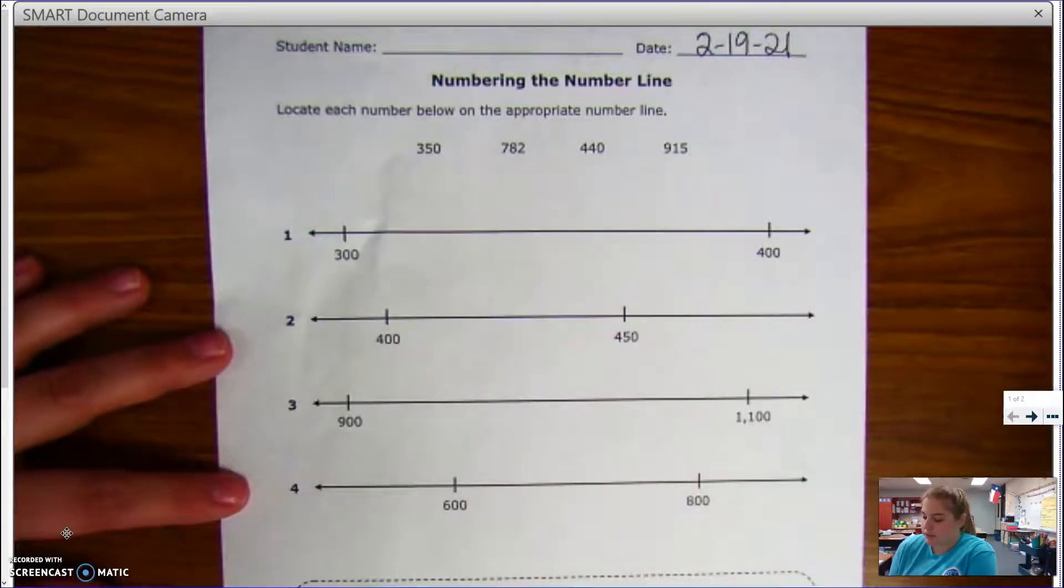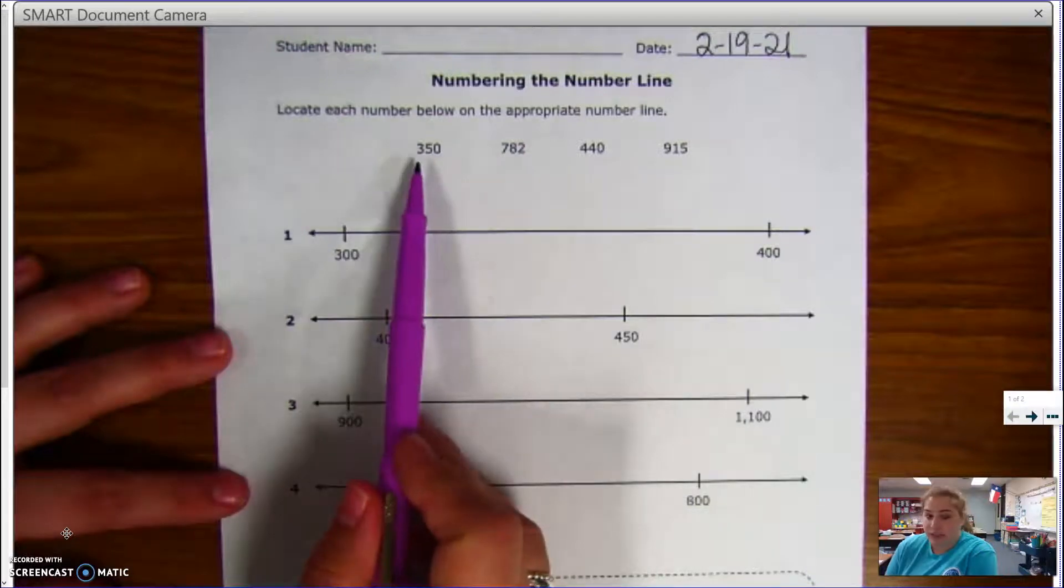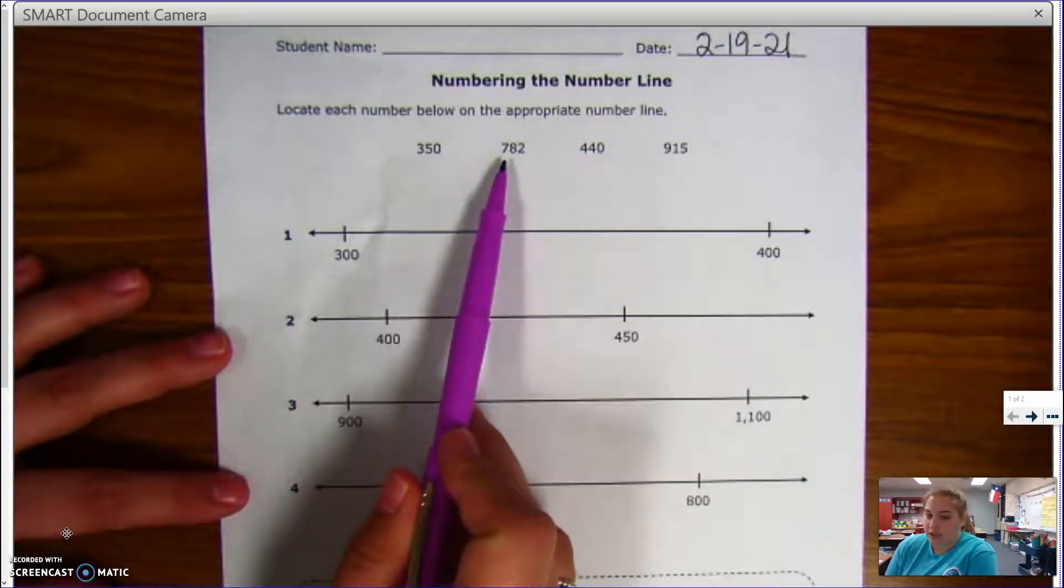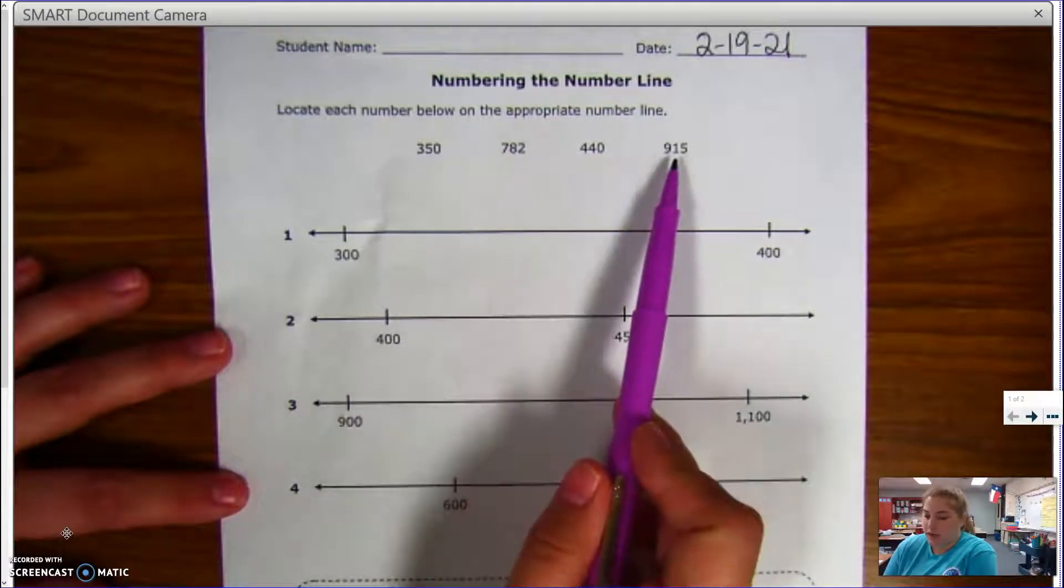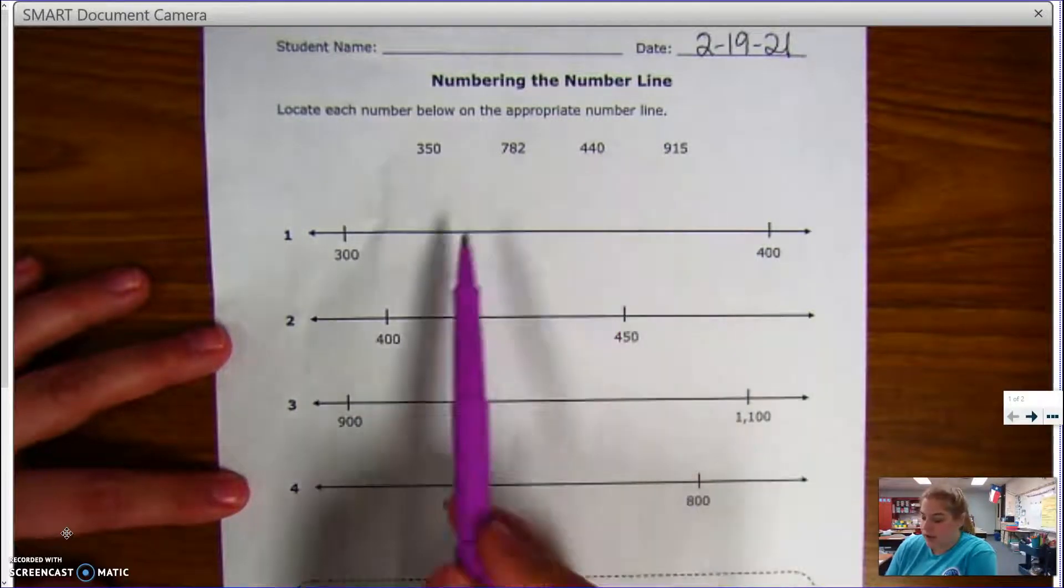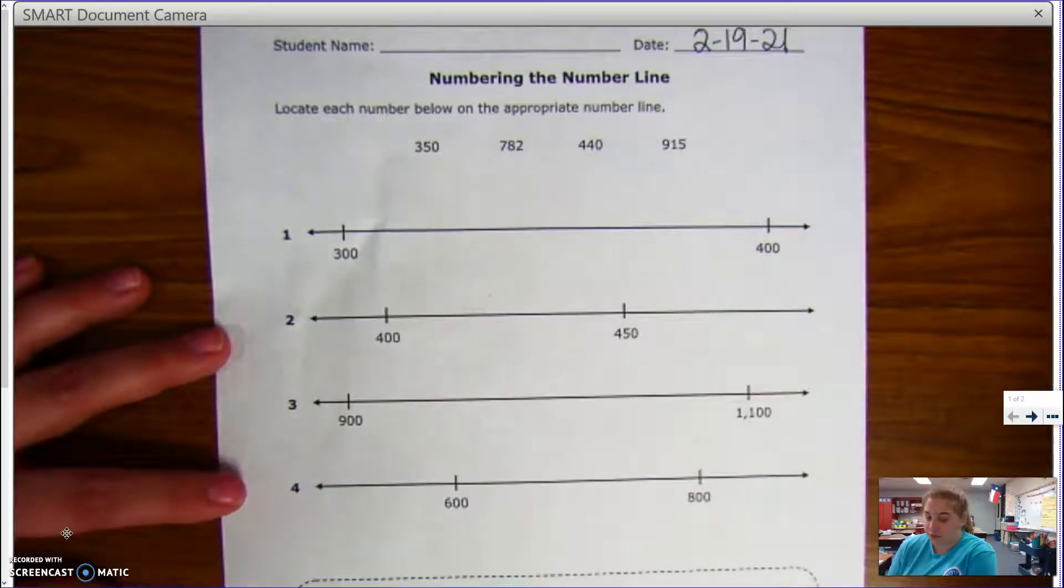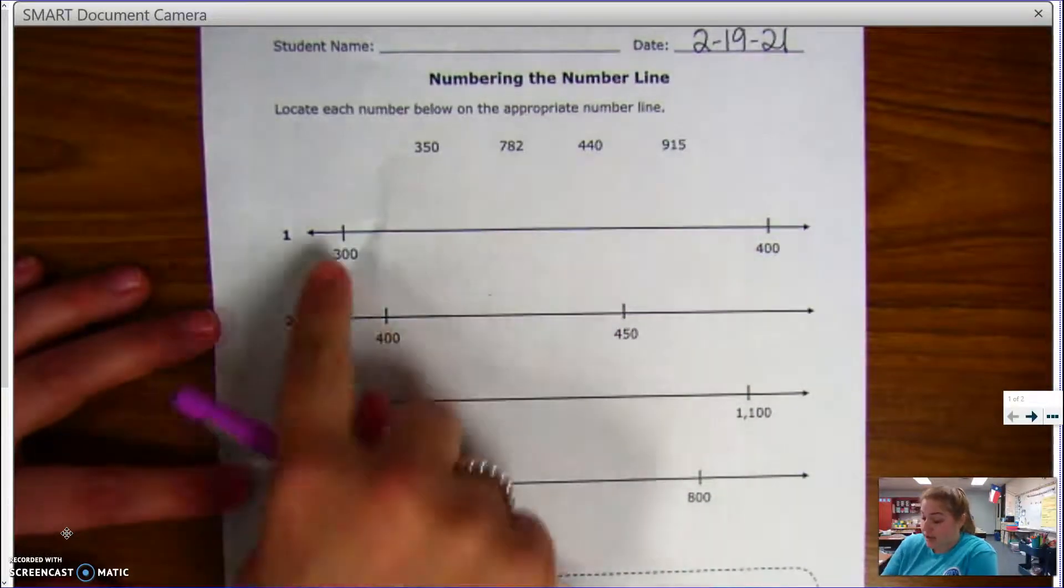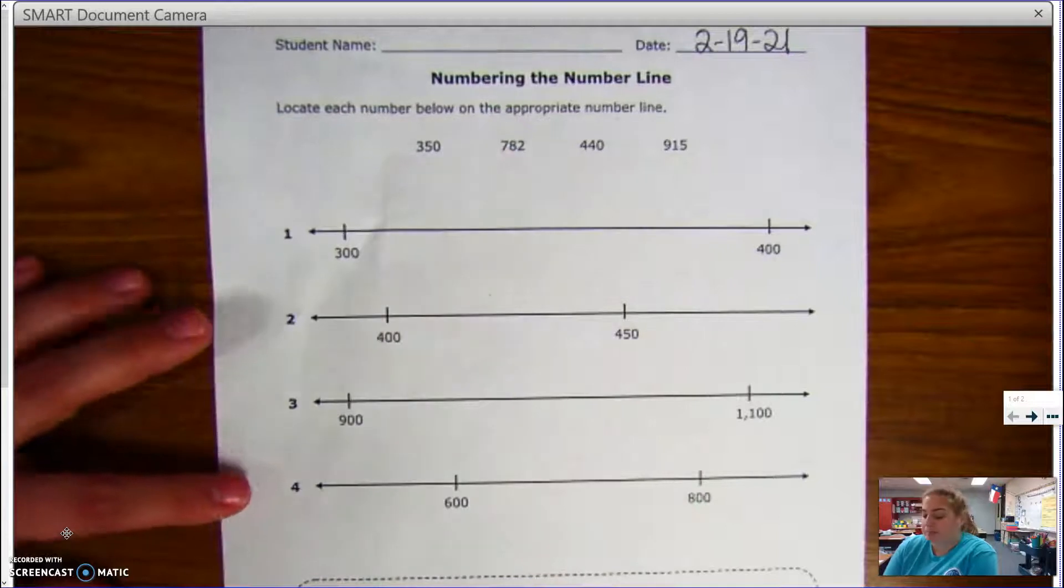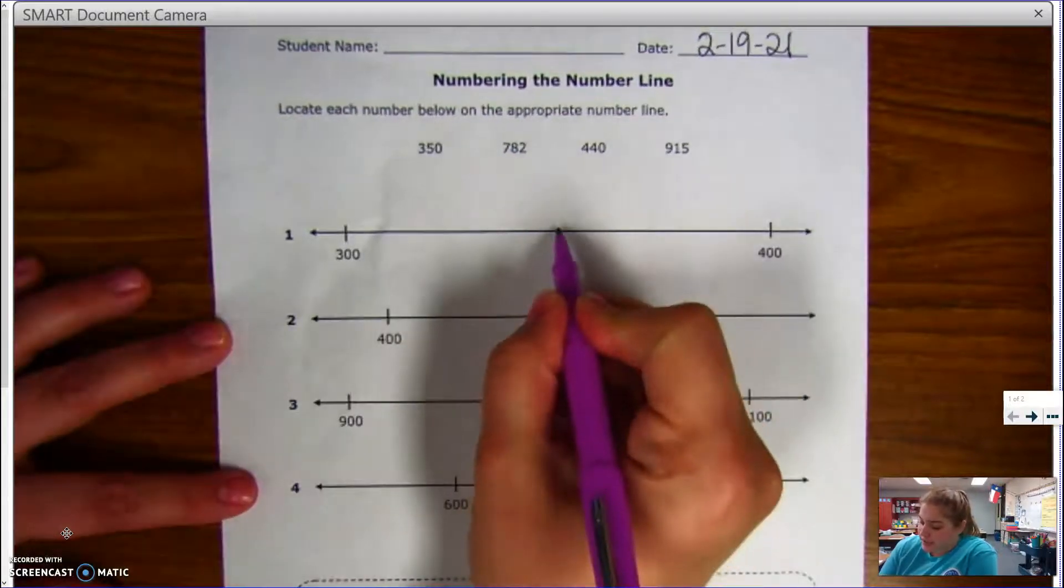350 goes between those two numbers. 782 does not, 440 does not, and 915 does not. So I know that 350 is the number I'm gonna put on this number line. 350 is the exact midpoint between 300 and 400.